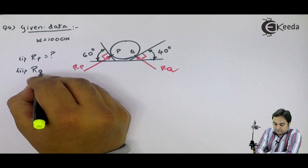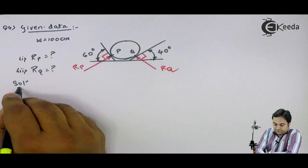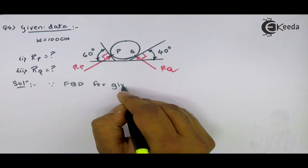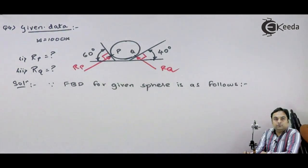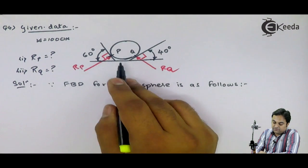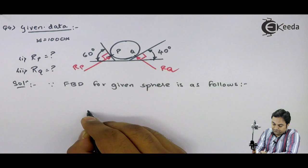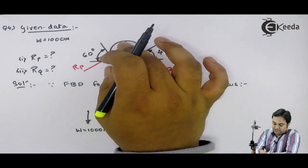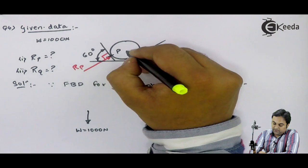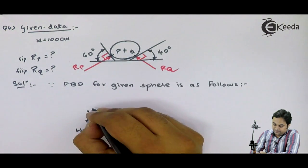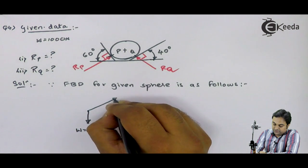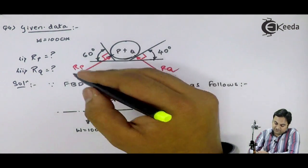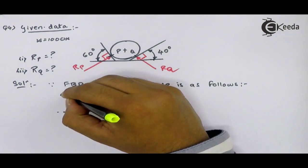I'll write the solution. FBD for given sphere is as follows: First, I will mark the weight. I'll replace the sphere with its weight, 1000 acting downwards. Then RP, reaction at P, I will extend it up to the center. This will be reaction at P. Then I'll draw a horizontal line.